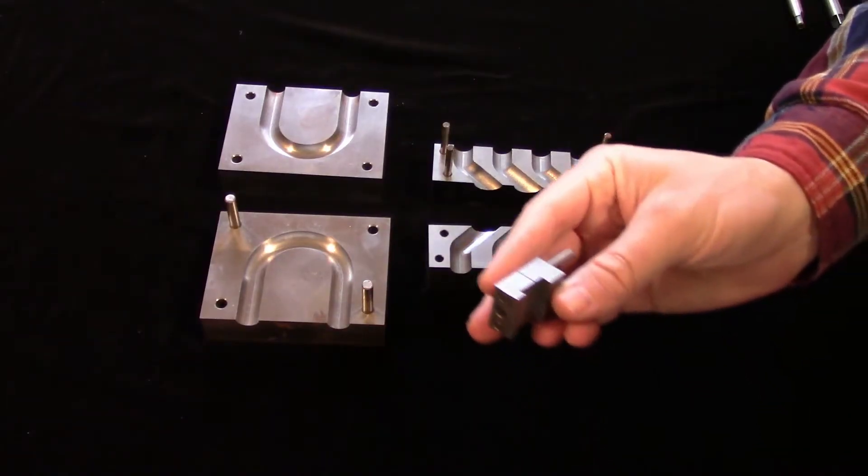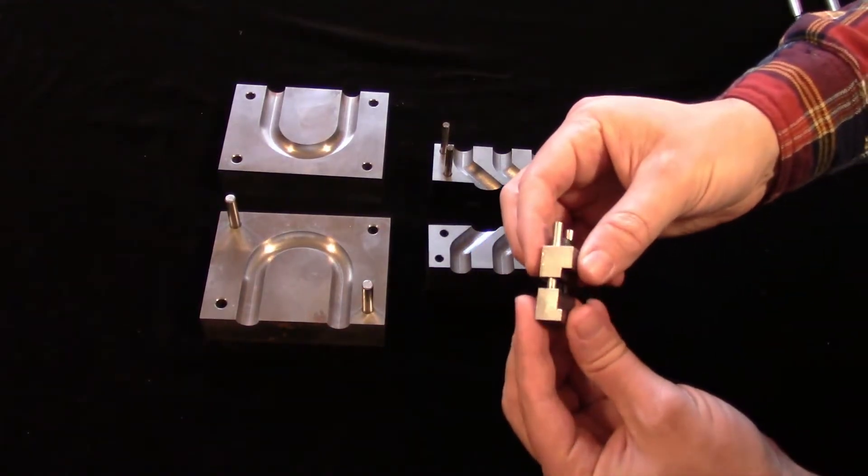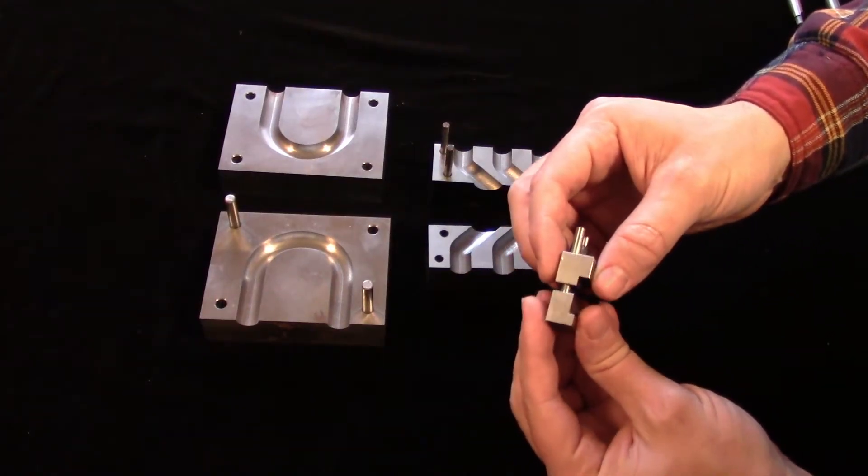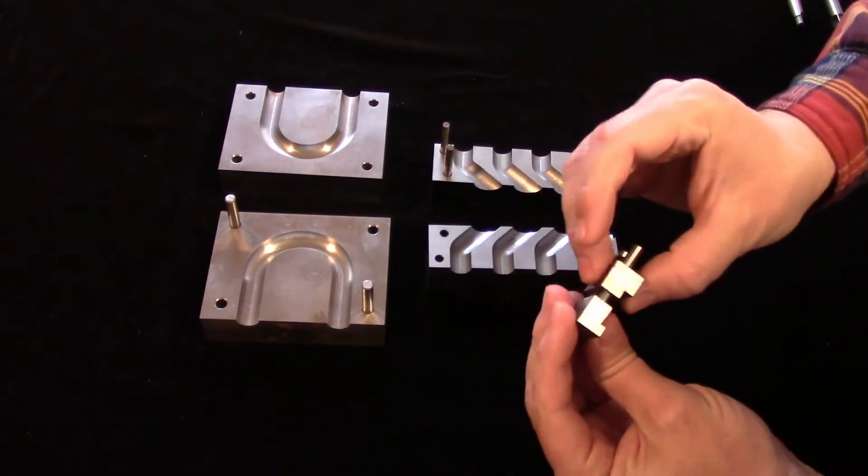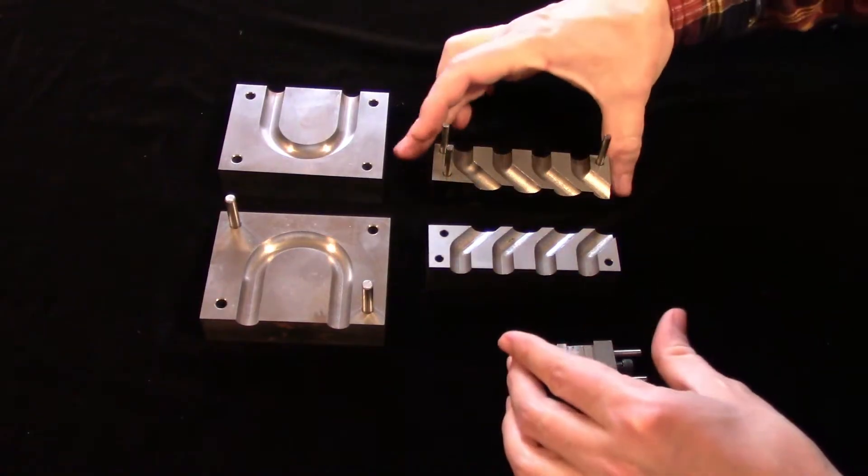This is useful for applications where you have two mating parts that need to be able to move, but also need to stay in relation to each other, like this vise stop or these ball out molds for rounding out tubing.